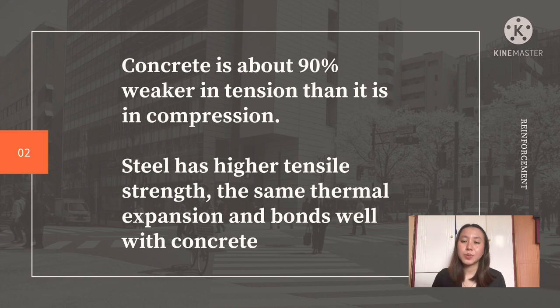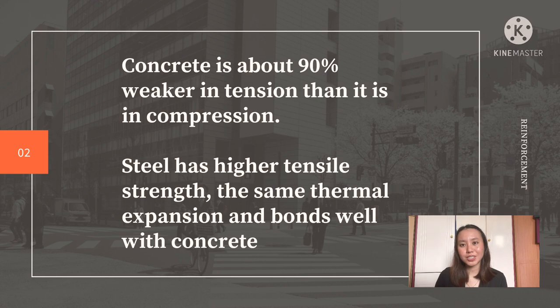Concrete is about 90% weaker in tension than it is in compression. Steel however has higher tensile strength but has the same thermal expansion and it bonds well with concrete.